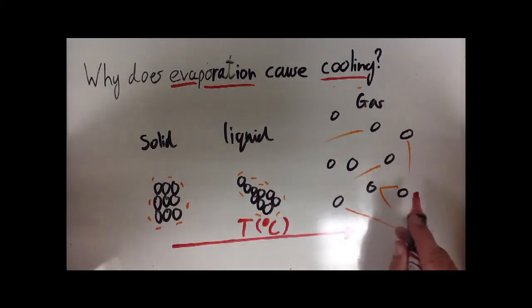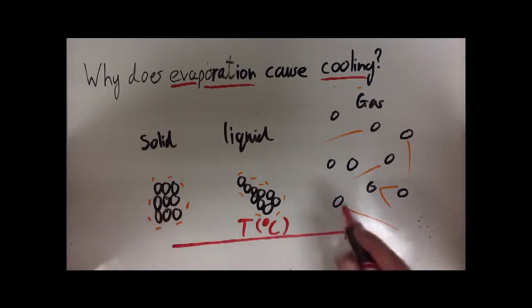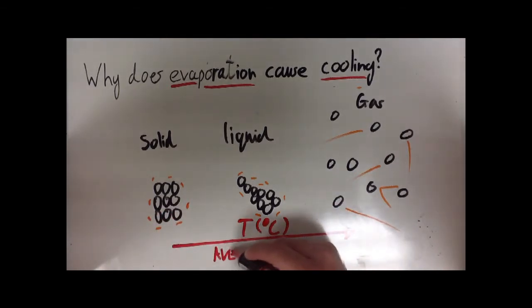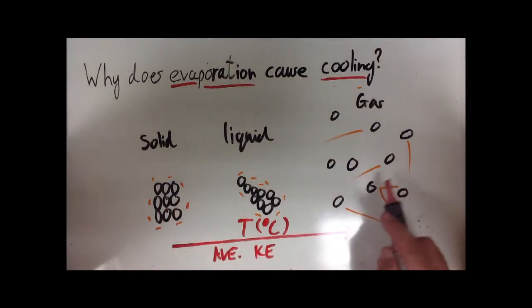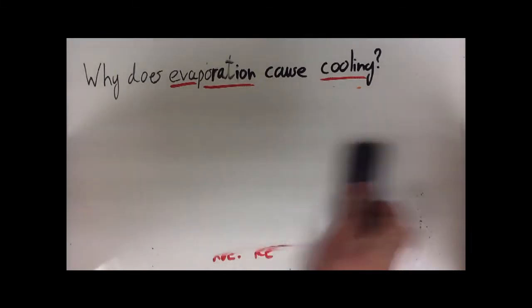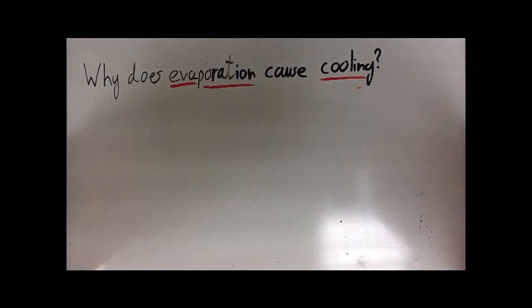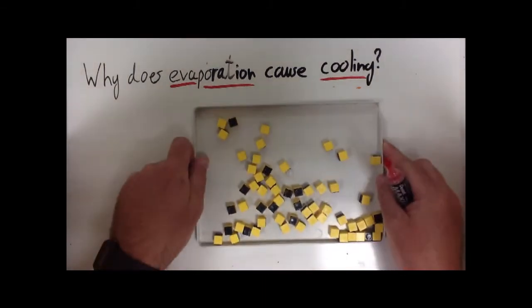What we're also increasing as we go from left to right here is the average kinetic energy of the particles. These particles are moving a little, these particles are moving a lot. We have increased the average kinetic energy. Now this can help us explain how something can evaporate and when it does it will cool things down.